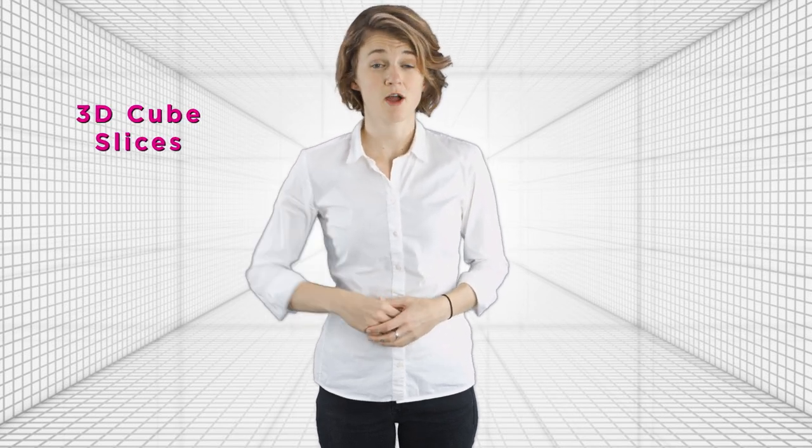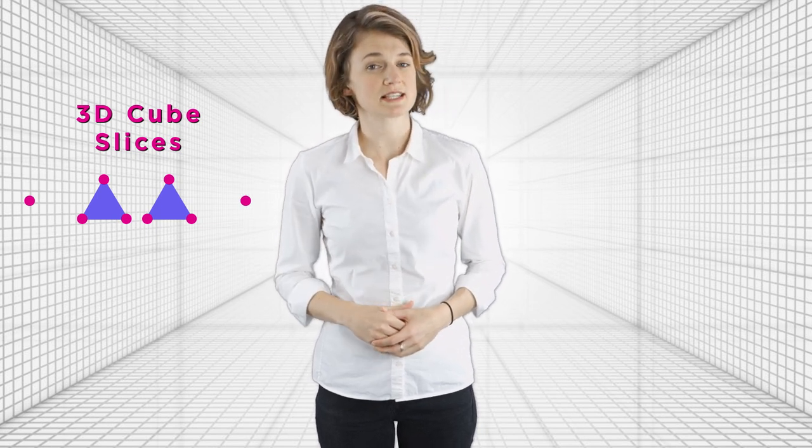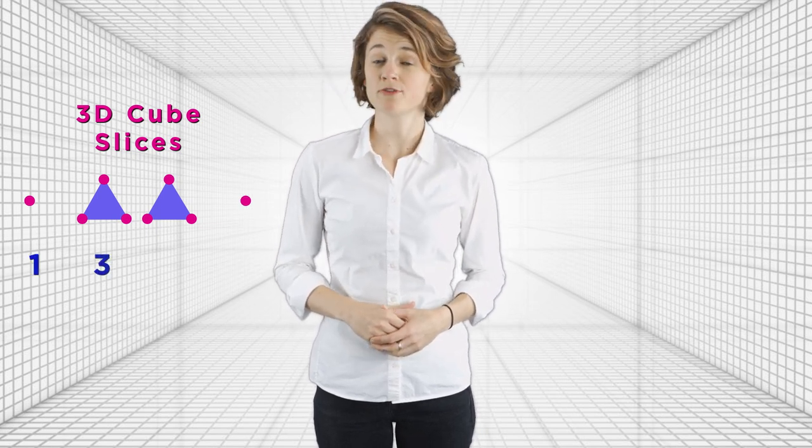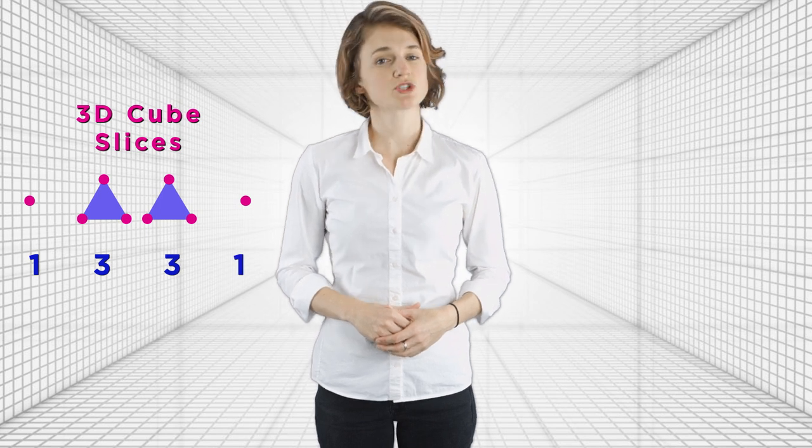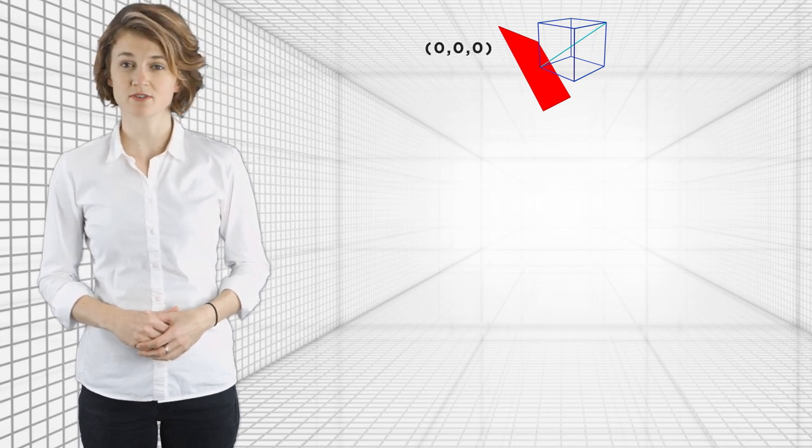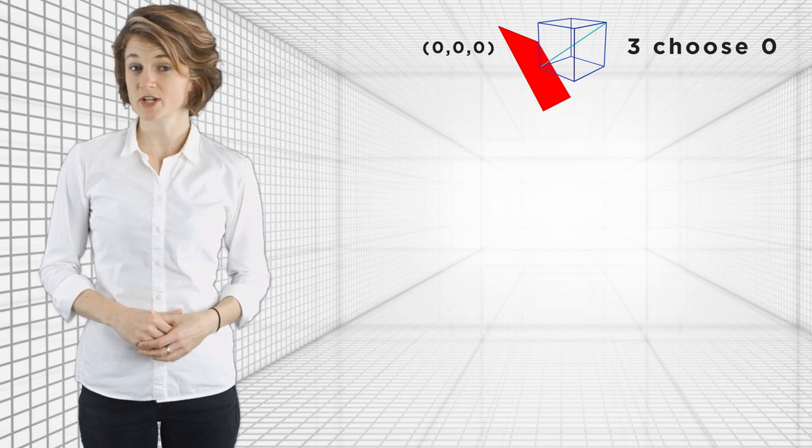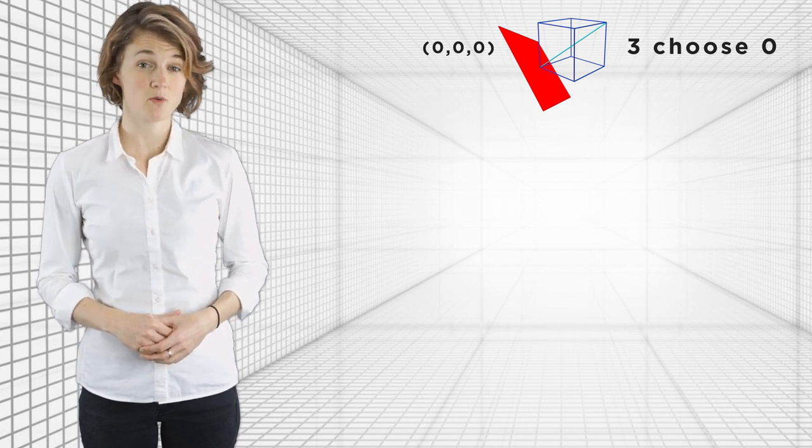To explain why this happens, let's first focus on the three-dimensional case. The slices of the 3D cube are a point, a triangle, another triangle, and another point. So the number of vertices these slices have are 1, 3, 3, 1, which corresponds to the third row in Pascal's triangle. The first diagonal slice intersects one vertex, 0, 0, 0. It corresponds to 3 choose 0, because there are 3 coordinates and 0 of them are 1s.